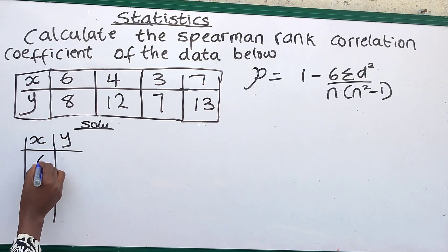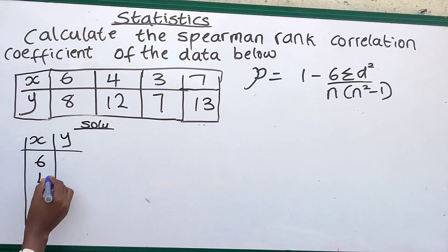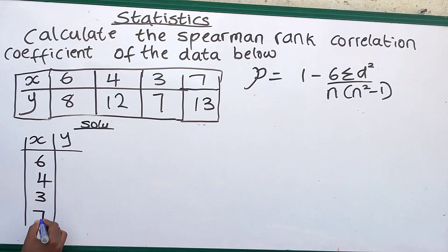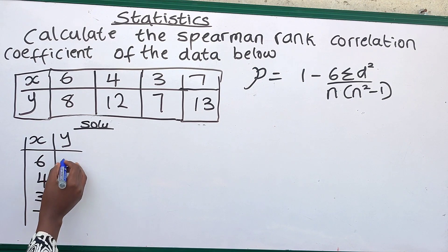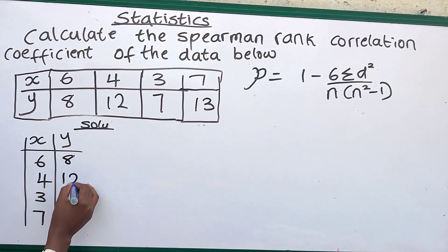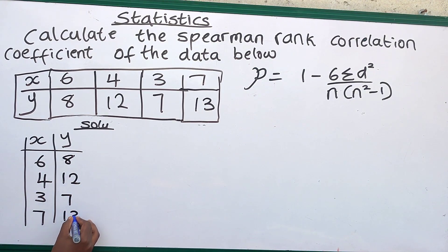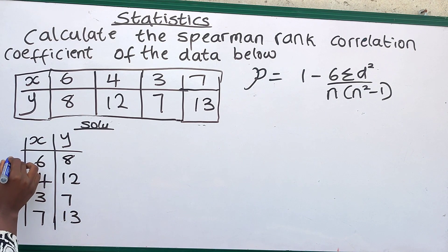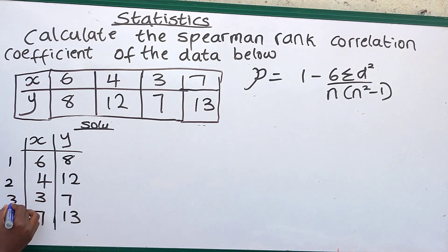We draw out the table. Our X values are 6, 4, 3, and 7. Our Y values are 8, 12, 7, and 18. The item numbers are 1, 2, 3, 4.